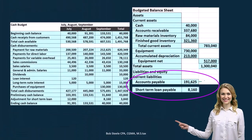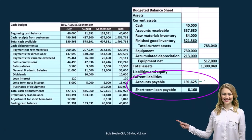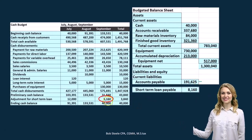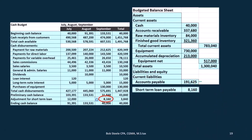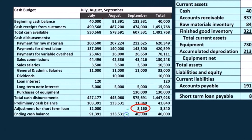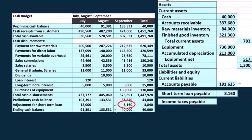Next we have the short-term loan payable of $8,160. We're going to take that from our cash flow statement because that loan is fluctuating — it's kind of like a line of credit. We needed that in order to get to our minimum cash balance of $40,000.